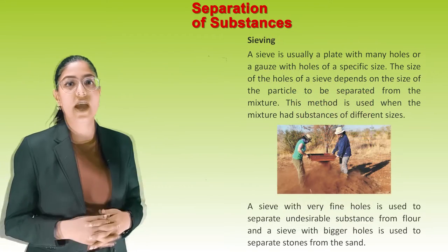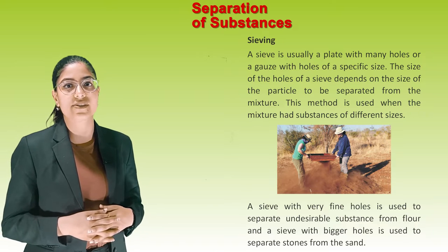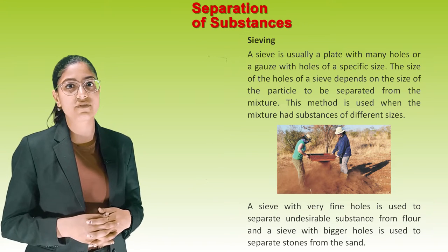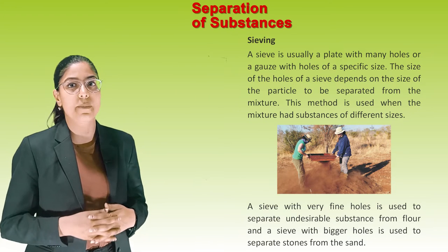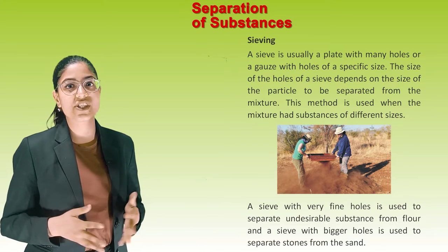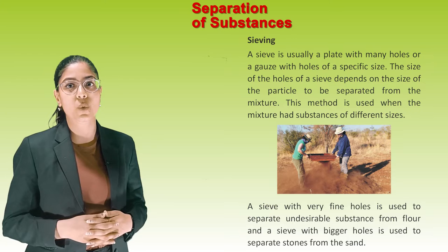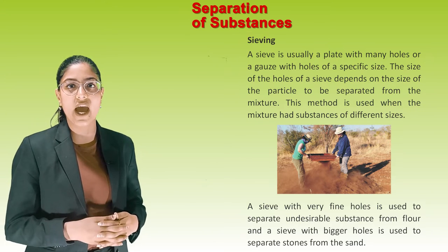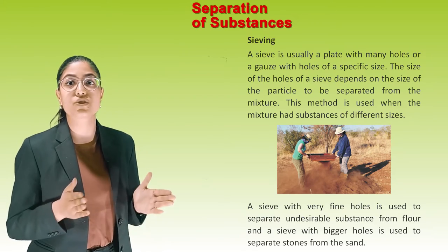Sieving: A sieve is usually a plate with many holes or a gauze with holes of a specific size. The size of the holes depends on the size of the particles to be separated. This method is used when the mixture has substances of different sizes. A sieve with very fine holes is used to separate undesirable substances from flour, and a sieve with bigger holes is used to separate stones from sand.